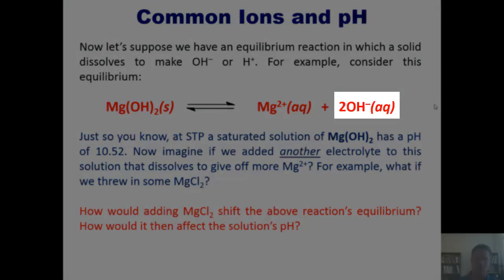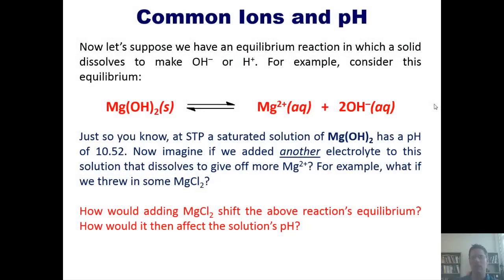Well, the hydroxide also has to recombine with the Mg2+. So that decreases the amount of hydroxide that you have floating freely in solution. And what does that do to the pH? It makes the pH less basic.